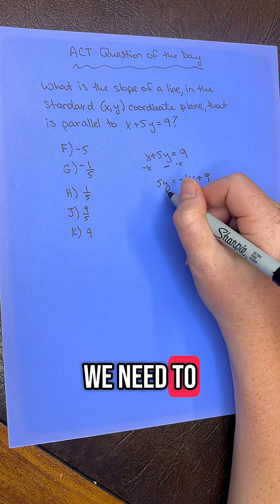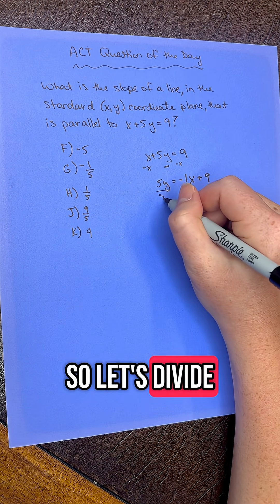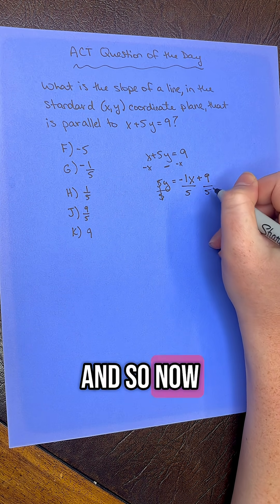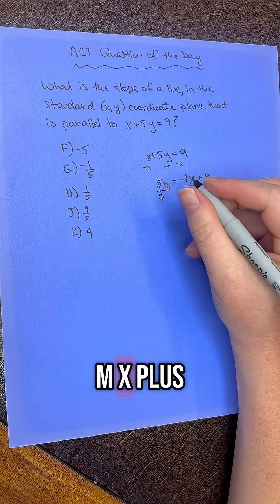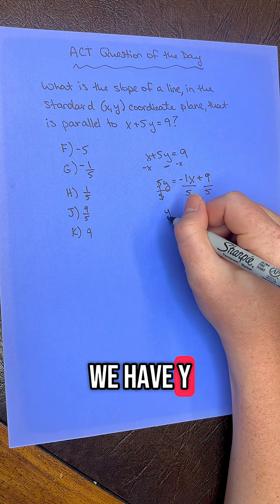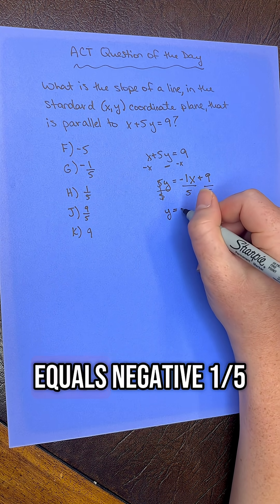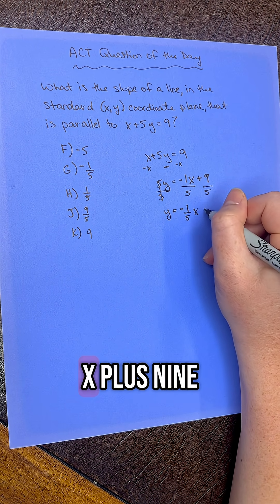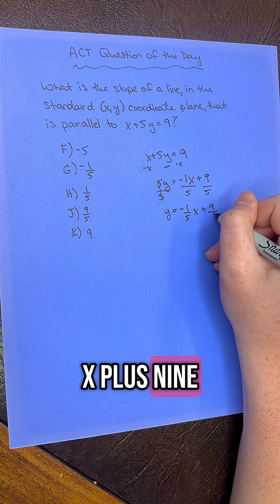Now we need to get y alone. So let's divide out by 5 every single term here. And so now for our y equals mx plus b form, we have y equals negative 1/5 x plus 9 over 5.